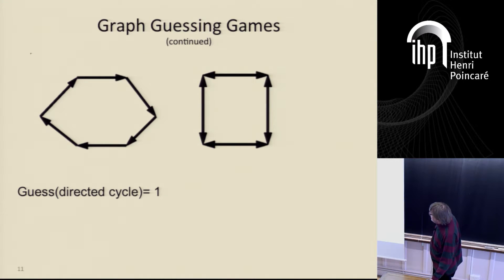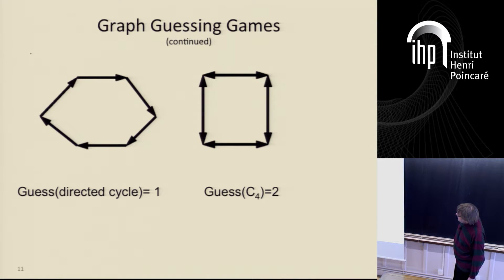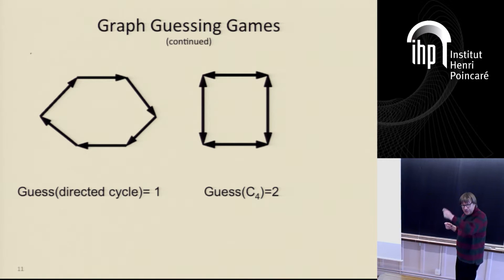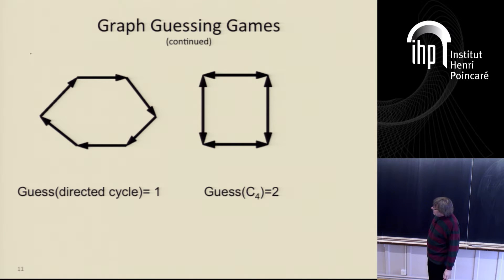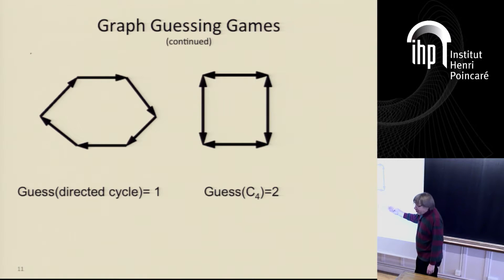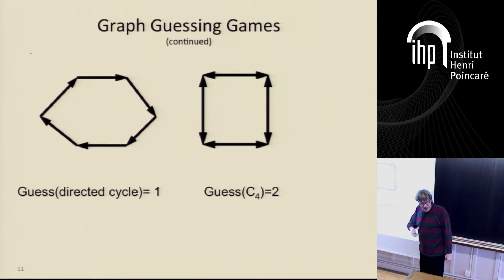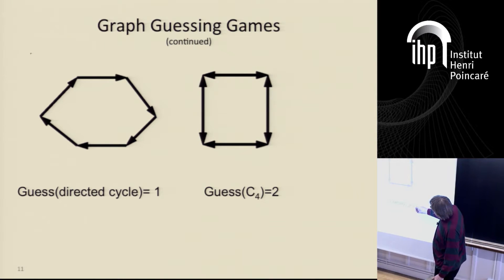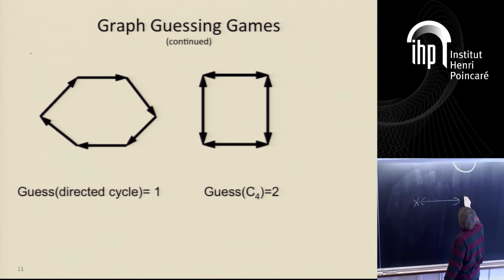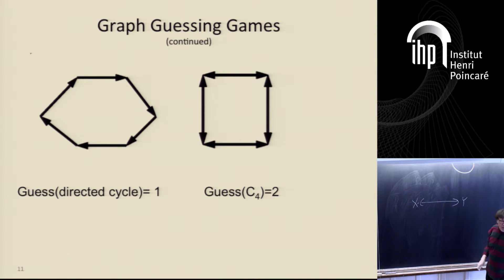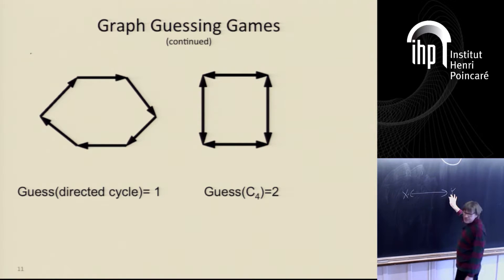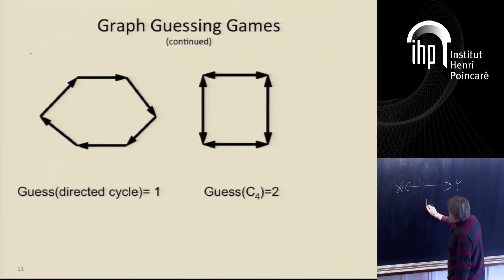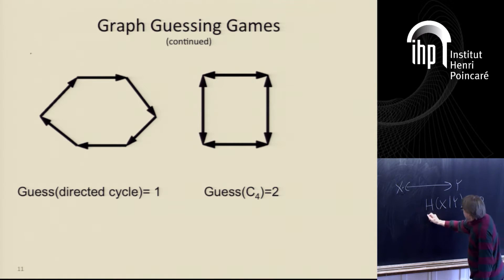For a bidirected cycle the guessing number is two. Now with four people sitting around a table, each able to see the hats of the person both to the left and to the right — how would they guess? For the upper bound, that's where information theory enters the picture. Let's consider two players: if X and Y are their values, a winning strategy requires that the entropy of X given Y is zero and the entropy of Y given X is zero.